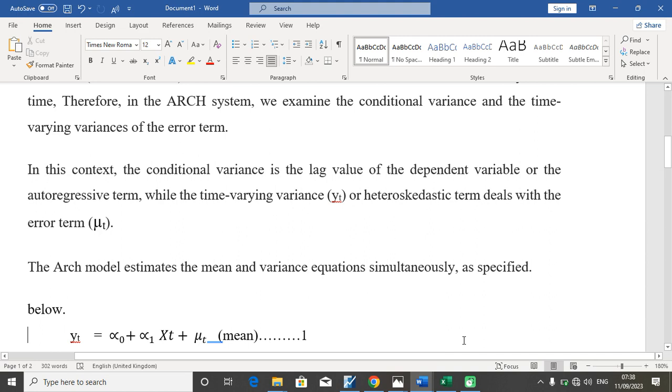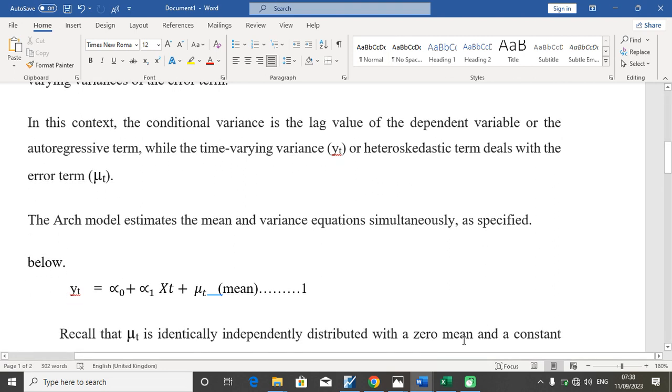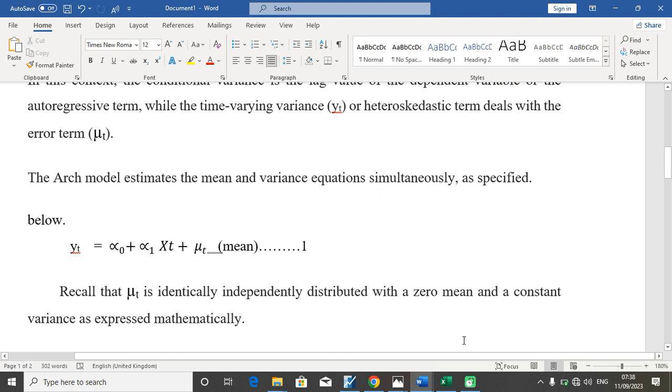In the ARCH modeling techniques or system, we are going to model or estimate both the mean equation and the variance equation simultaneously, which implies that in the ARCH system we are going to be exposed to two results: the first result will be the mean equation, the second result will be the variance equation.